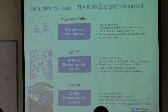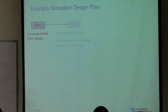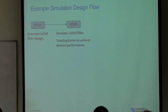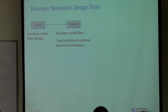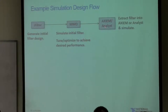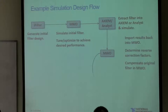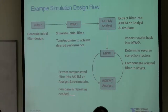We're going to use these three tools for the example design today. The workflow is: use iFilter within AWR, which does the hard mathematical work for you — applying filter tables and transformations instantly to generate a starting point. Then use Microwave Office to quickly simulate performance and tune it in because it goes fast. Then take it into 3D and 2.5D analysis tools to simulate full effects and check for unintended consequences. We'll bring it back and forth between Microwave Office and Axiom/Analyst to iterate on the design until it's honed in.